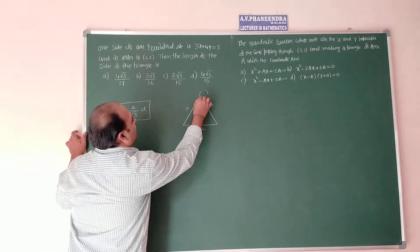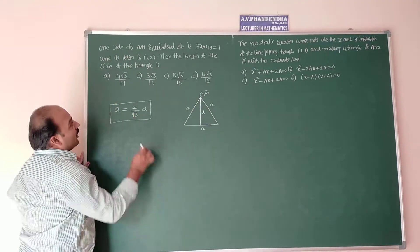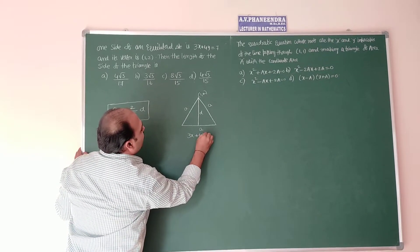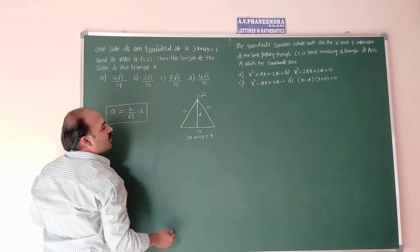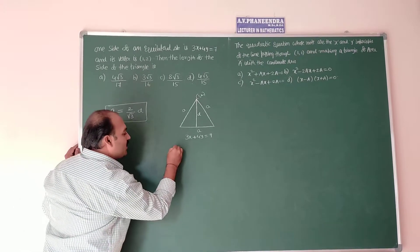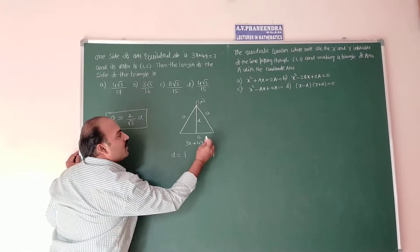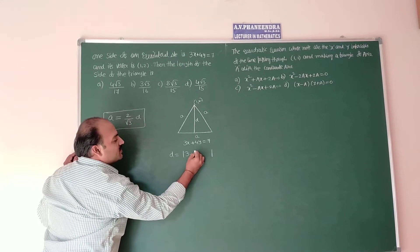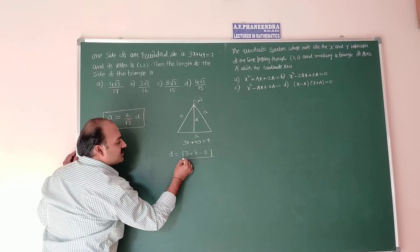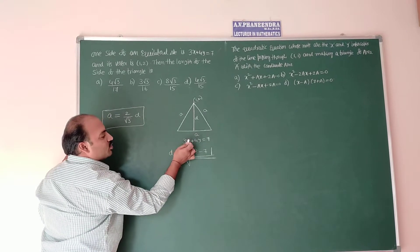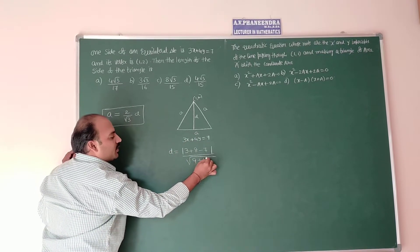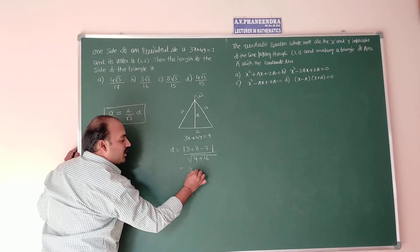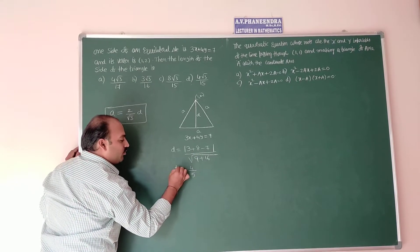D how to calculate? D is one vertex is given that is 1 comma 2, and one side is given as 3x plus 4y is equal to 7. First calculate D value. D is equal to perpendicular distance mod from 1 comma 2 to this line, that's 3 plus 8 minus 7 divided by root of x coefficient square plus y coefficient square, which is equal to 11 minus 7 is 4, 4 divided by root 25 is equal to 4 by 5.